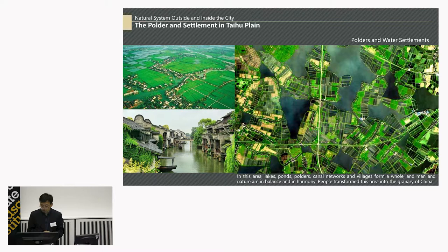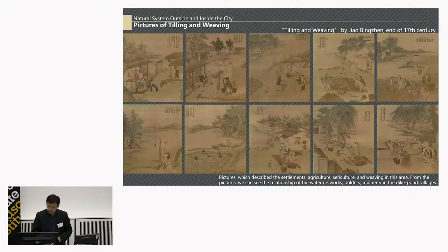In this area, the lakes, the ponds, and the canals network with villages and roads — all these elements compose a system, and nature and man are in balance and in harmony.